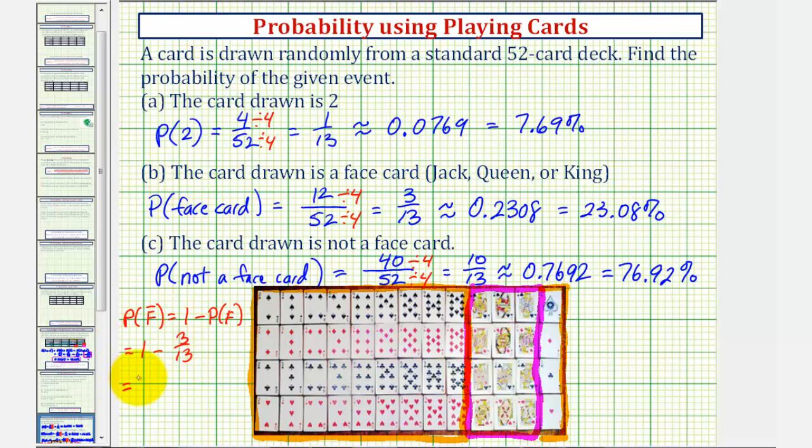Well, one is equal to 13/13. 13/13 minus 3/13 gives us the same result of 10/13, which we found using the basic probability formula.